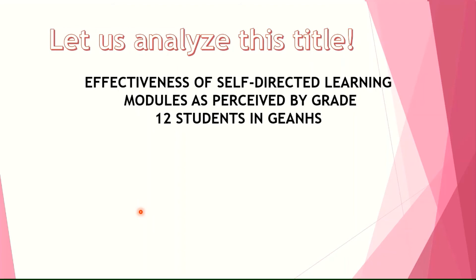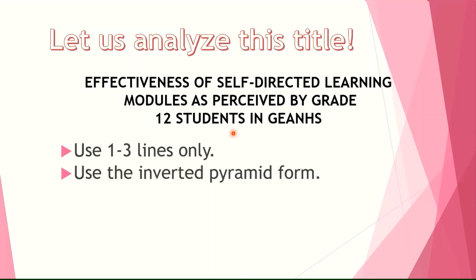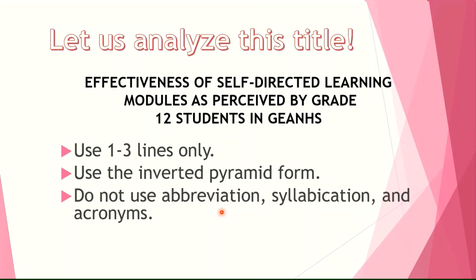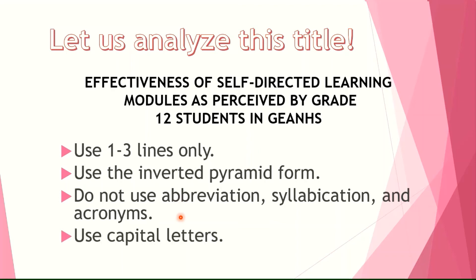Let's analyze this sample title: 'Effectiveness of Self-Directed Learning Modules as Perceived by Grade 12 Students in JS.' Does it follow the tips? It uses one to three lines — yes. It has the inverted pyramid form — yes. No abbreviations or syllabication — yes. But there is an acronym, 'JS,' which is erroneous. We need to spell it out as 'General Emilio Aguinaldo National High School' instead of using the acronym 'GEANTS.' Capital letters are used correctly.